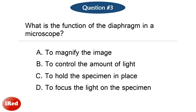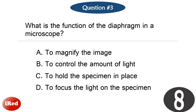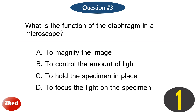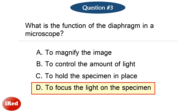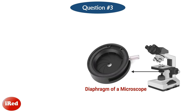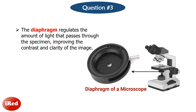Question number 3: What is the function of the diaphragm in a microscope? The correct answer is letter D, to focus the light on the specimen. The diaphragm regulates the amount of light that passes through the specimen, improving the contrast and clarity of the image.